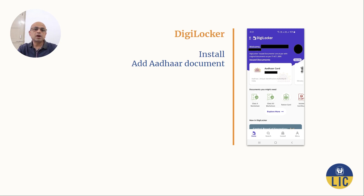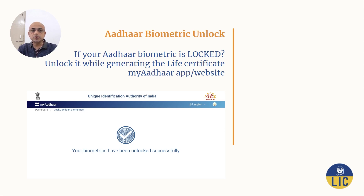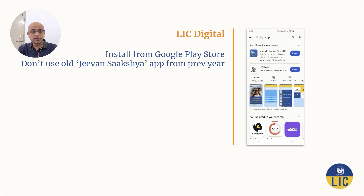To use DigiLocker for authentication, make sure you have installed DigiLocker and added your Aadhaar document in that app. To use Aadhaar authentication, make sure your Aadhaar biometric is unlocked — you might have locked it to avoid recent bank frauds. You can unlock it, use this app to generate your life certificate, and then lock it again. You can use the mAadhaar app or its website to lock or unlock your Aadhaar biometric.